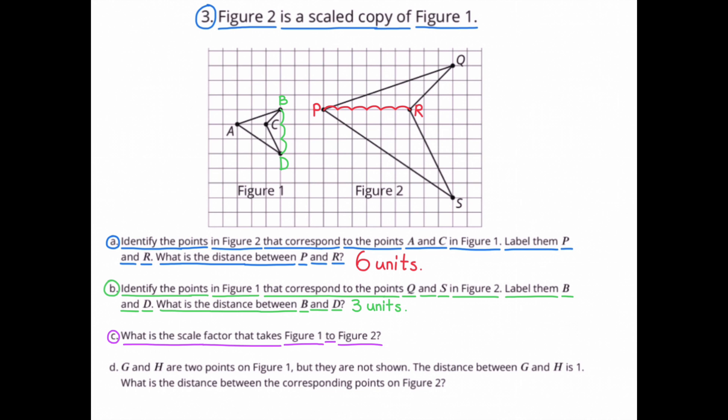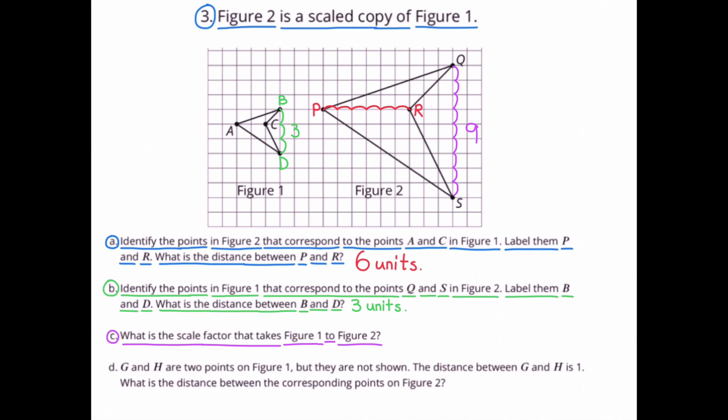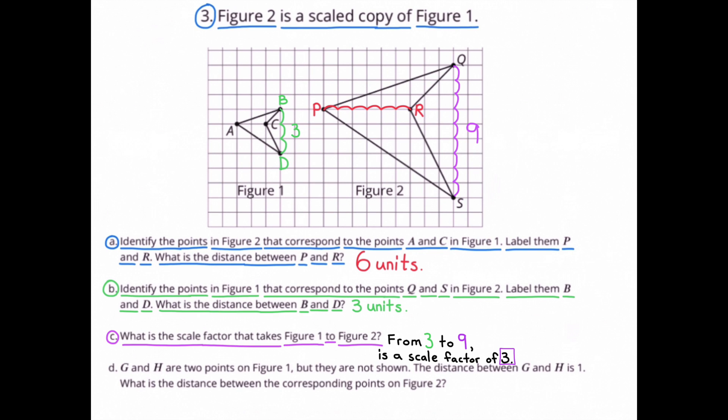C. What is the scale factor that takes Figure 1 to Figure 2? On Figure 1, the distance between points B and D is 3. And the distance between their corresponding points on Figure 2, points Q and S, is 9. And 9 is 3 times greater than 3. So it would have a scale factor of 3.